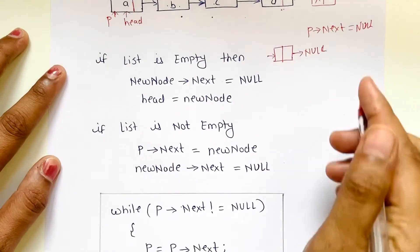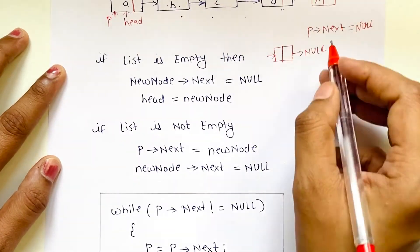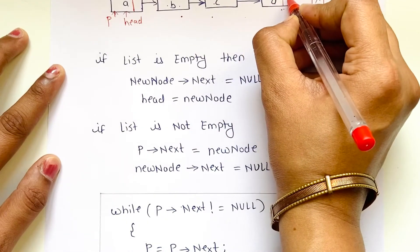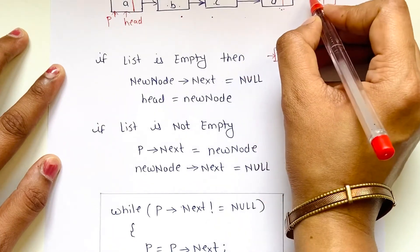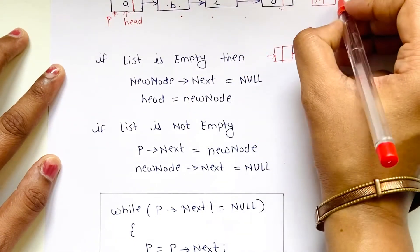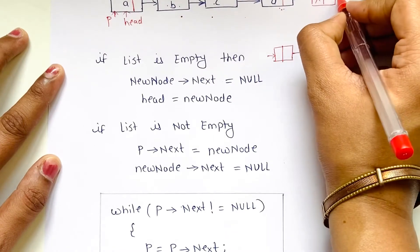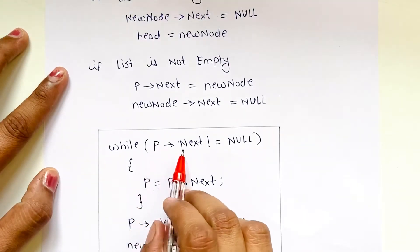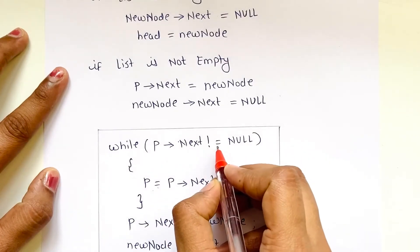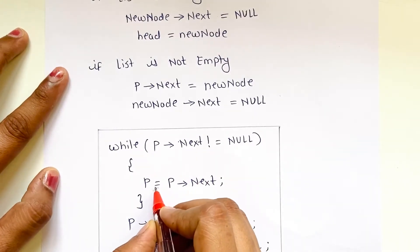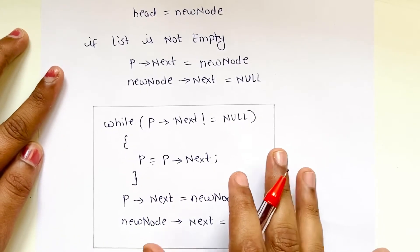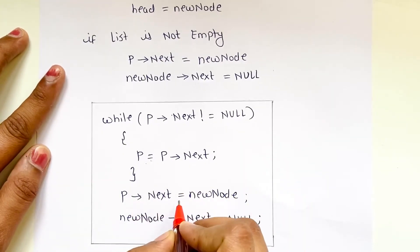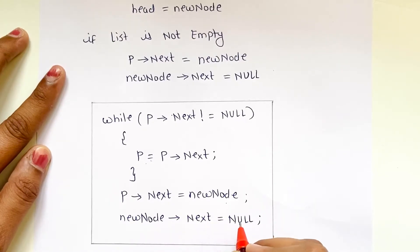Once you reach the last node, set p.next equal to the new node — meaning the next field of the current last node now points to the new node — and then set the next field of the new node to null. In short: while p.next is not null, move p (i.e., p = p.next); once you reach the last node, set p.next = new_node and new_node.next = null.